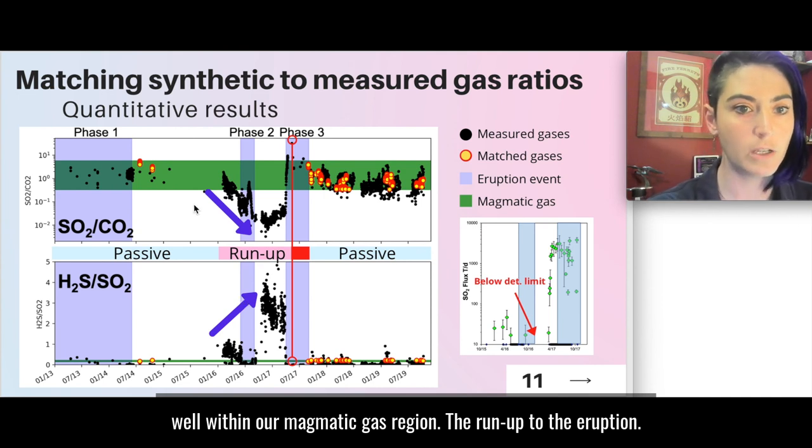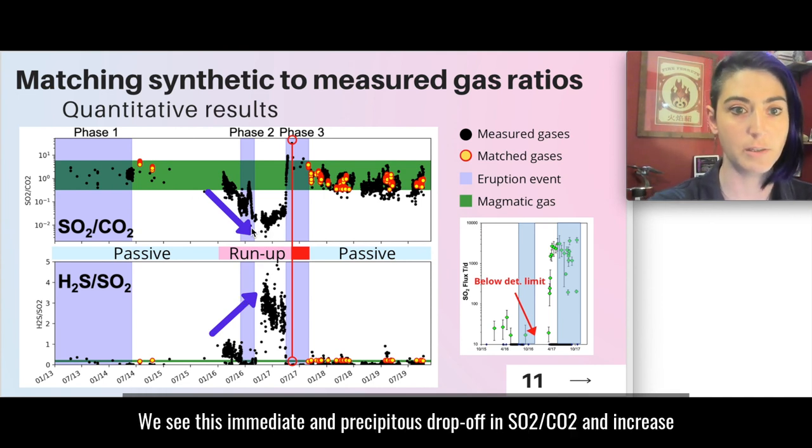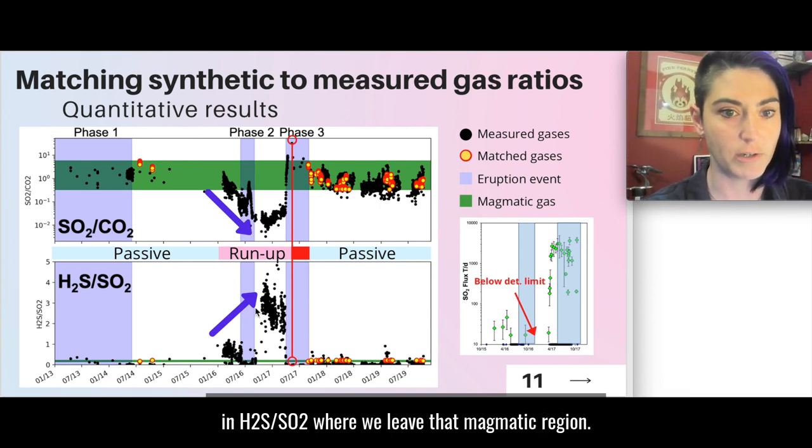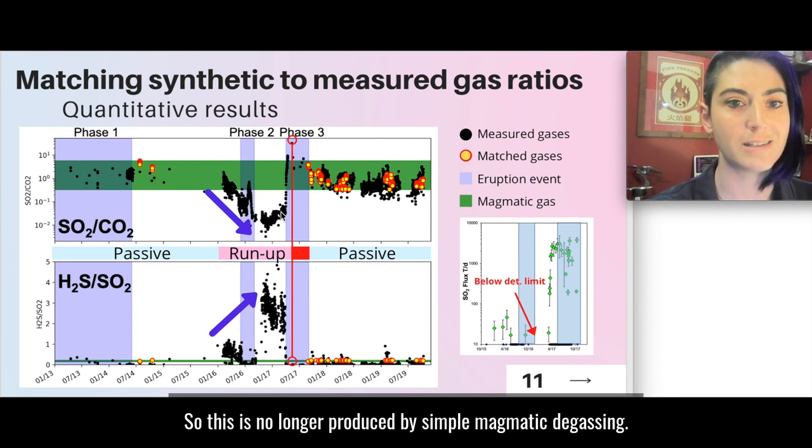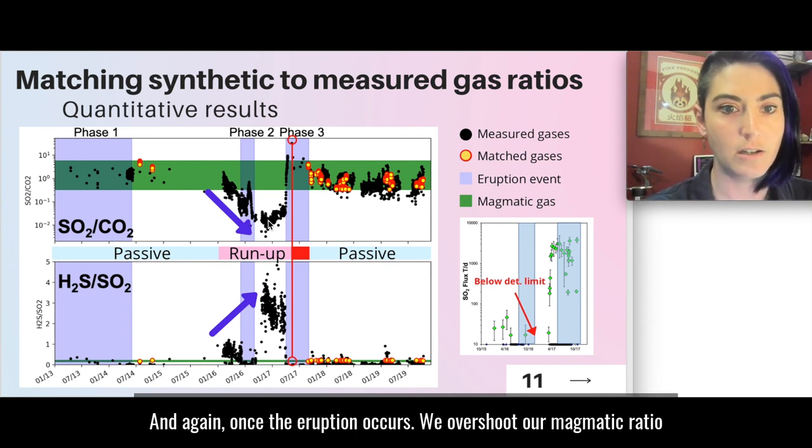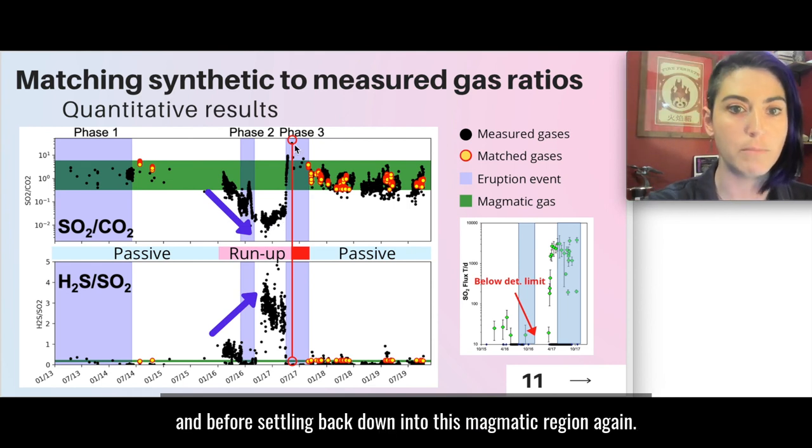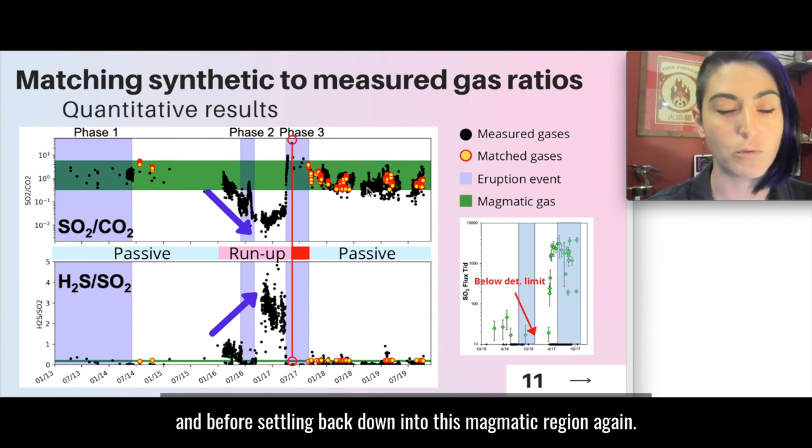What you'll immediately notice is that the passive regions of this plot are pretty much well within our magmatic gas region. The run-up to the eruption, we see this immediate and precipitous drop-off in SO2/CO2, an increase in H2S/SO2, where we leave that magmatic region. So this is no longer produced by simple magmatic degassing. And again, once the eruption occurs, we overshoot our magmatic ratio before settling back down into this magmatic region again.